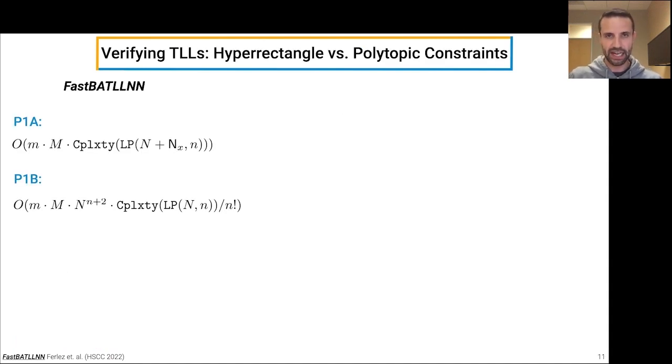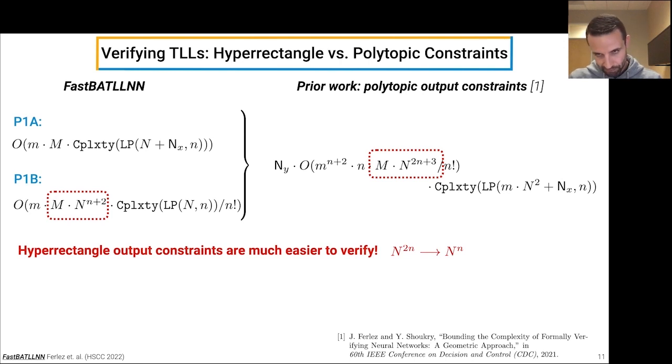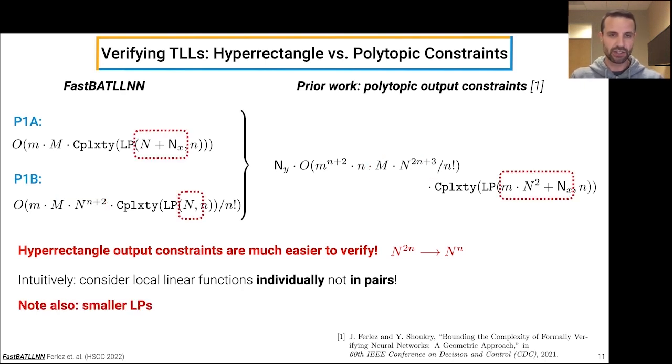So what do we get by considering hyper-rectangle constraints versus polytopic constraints in our prior work for TLLs? So you'll recognize the complexity of problem 1A, shown here for FastBATLLNN, and I've skipped some steps to show you directly the complexity for problem 1B, as we just described it. So compared to our prior work for TLLs with generic polytopic output constraints, we know that the crucial exponent, the large one, has half the exponent in FastBATLLNN as it does in our prior work, which means we can verify hyper-rectangle output constraints with big O of capital M, the number of local linear functions, to the input dimension versus the number of local linear functions to two times the input dimension. So intuitively, this is because in FastBATLLNN, with hyper-rectangle output constraints, we can consider the local linear functions individually and not in pairs. We should also note that FastBATLLNN uses smaller LPs, which is a further computational savings.